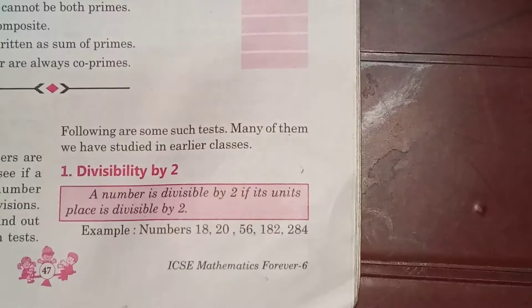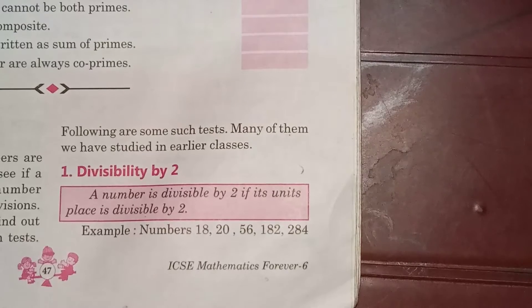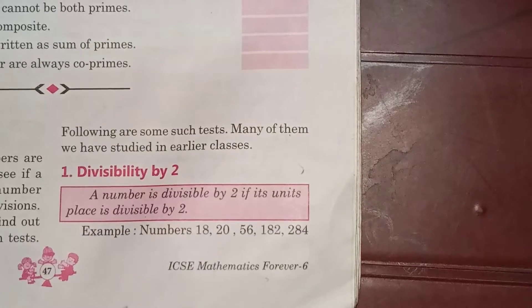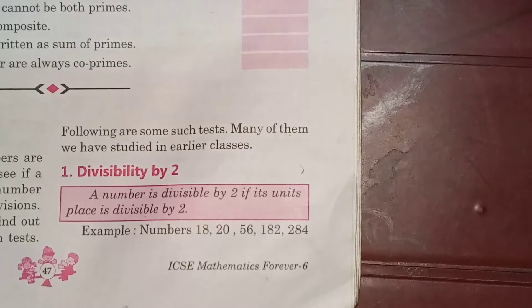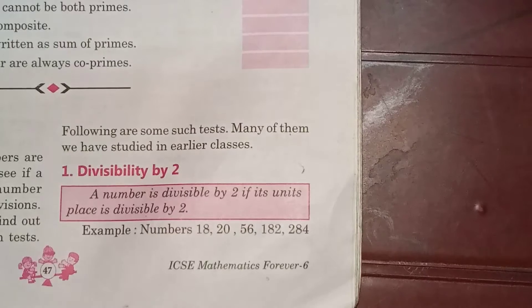First of all, we will discuss divisibility by 2. A number is divisible by 2 if its last digit is an even number or 0. We can also say a number is divisible by 2 if its units place is divisible by 2.